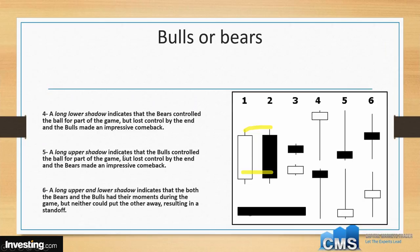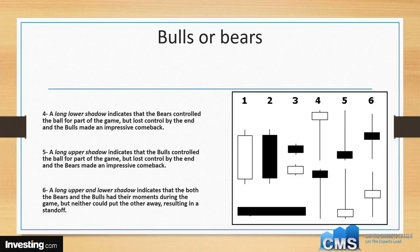Number four: similar small bodies but with long wicks going downward. That tells us the bears dominated at some point but could only hold it for a short period — the bulls were able to pull the ball back to close to where it started. Number five is the exact opposite: the bulls dominated during that timeframe but lost it, ending up closing fairly close to where they opened. Number six: a complete tug of war with nobody having any control. Remember, it doesn't tell us much about trading directly, but it tells us the story of the bulls and the bears, which is inevitably the most important story of the marketplace.